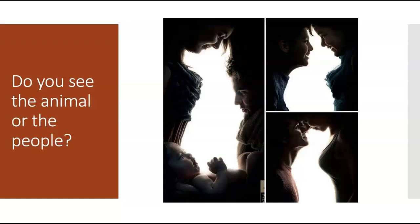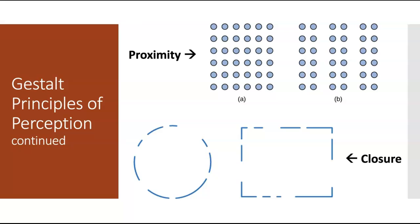The next Gestalt principle is proximity. So this is the idea that things that are close to one another tend to be grouped together. So this principle of proximity would suggest that you should see this as one block of dots and then this as three columns of dots. Because based on this principle, we group these together, these together, and these together. The parts that are close to each other, the parts that are close in proximity get grouped together.